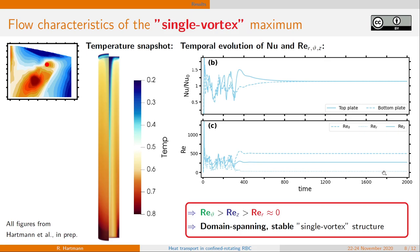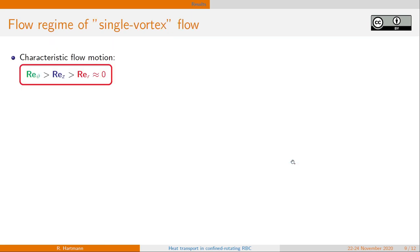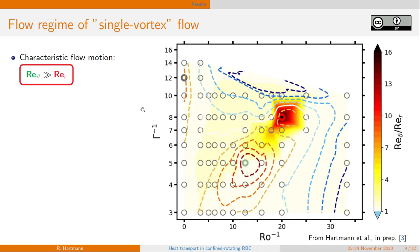So compared to both other maxima, we have a very large ratio between the azimuthal component and the radial component. The vertical component is somewhere in between. From this characteristic flow motion, we have this large ratio of azimuthal over radial motion, which should be typical for the single vortex flow.